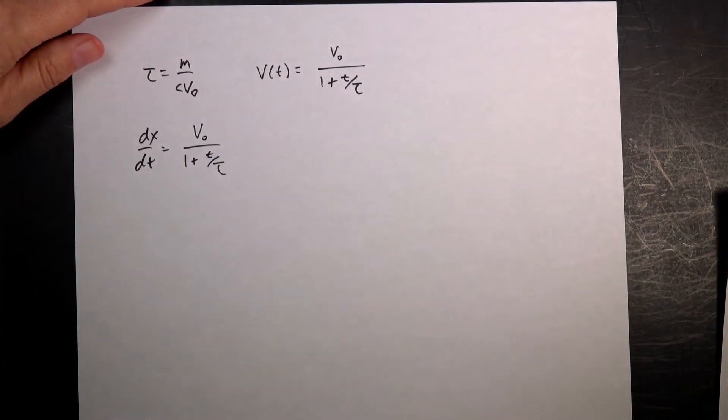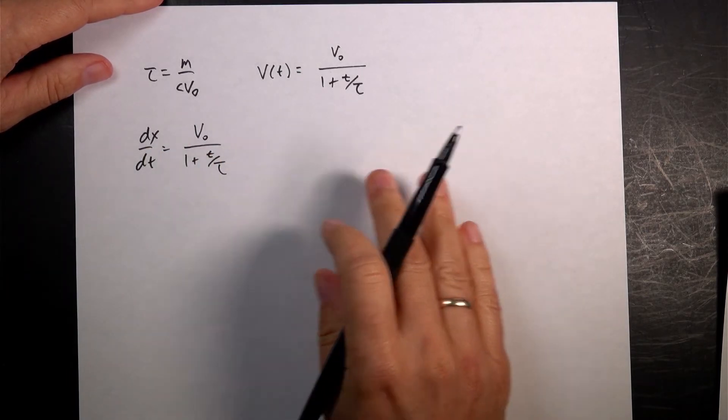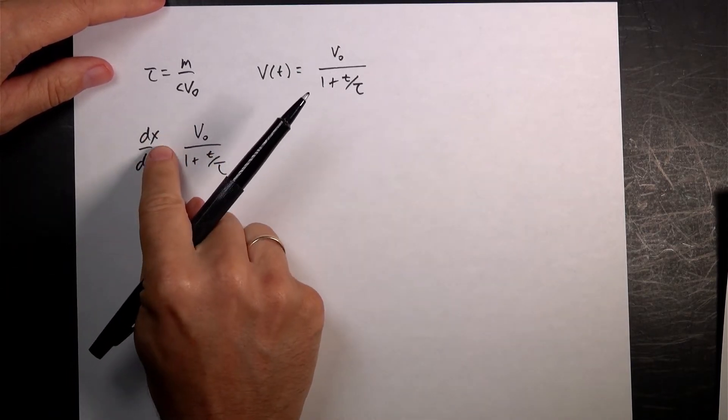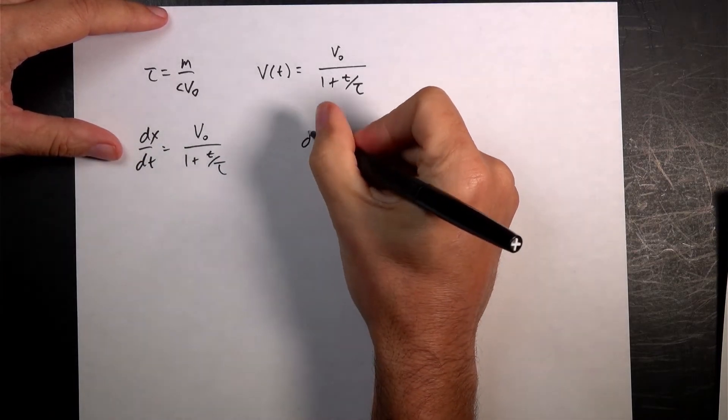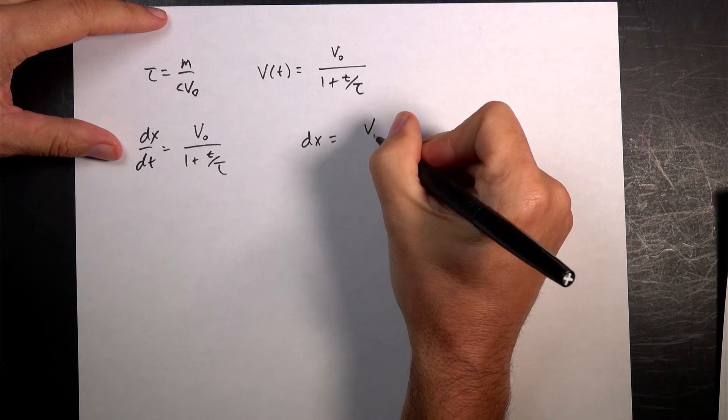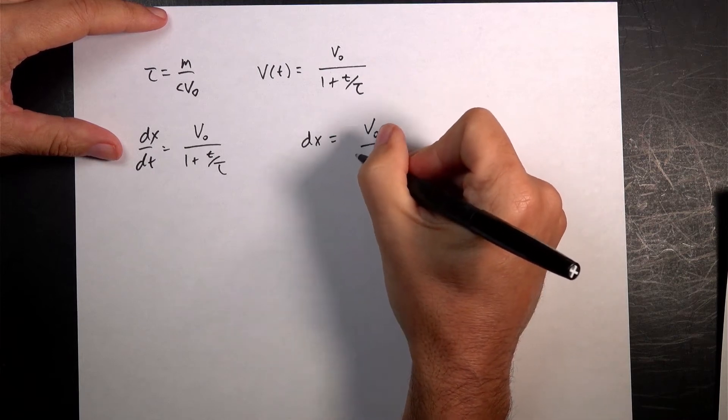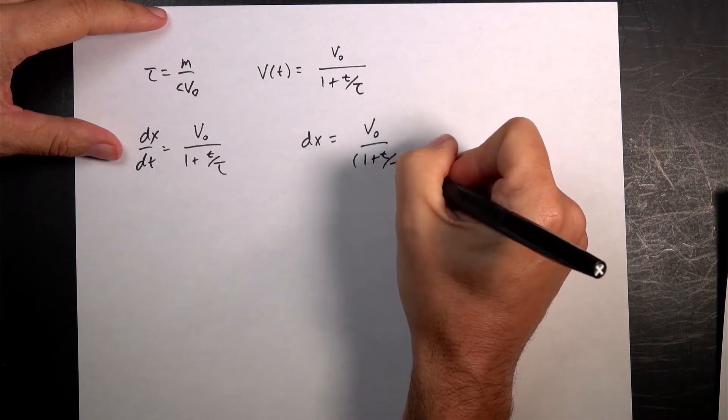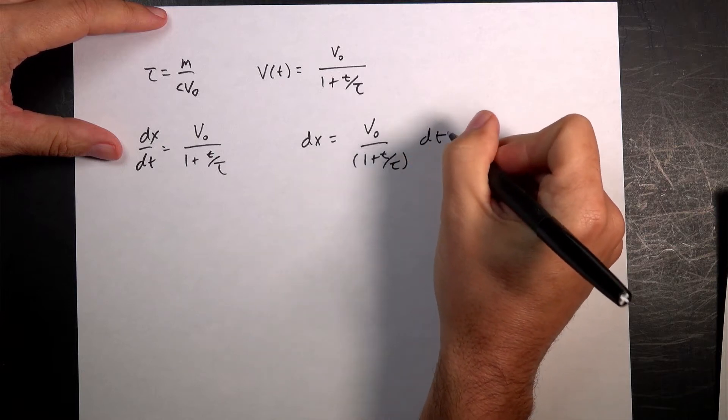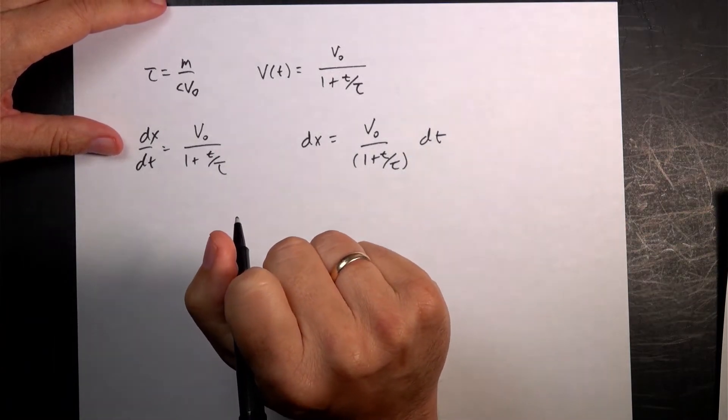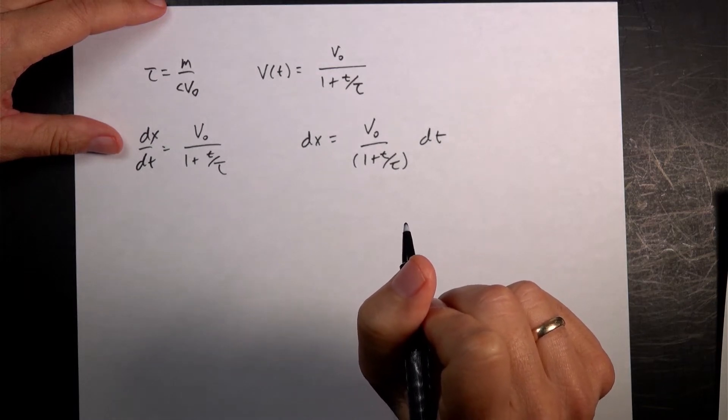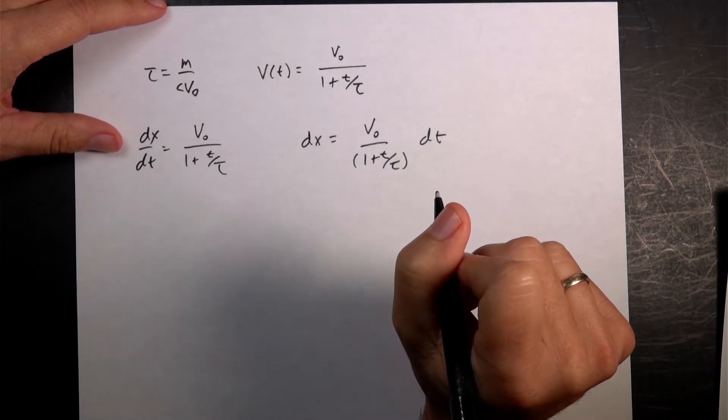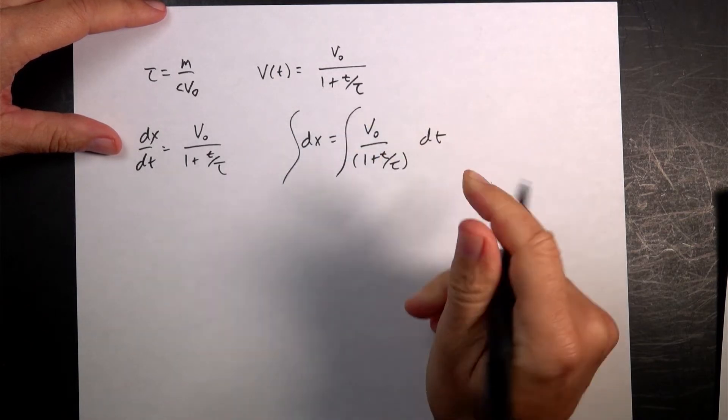And again, I want to separate the variables. So I want to get all the x terms on one side, all the t terms on the other side. There's only one x term, and it's dx, so that's pretty easy. So I can just multiply both sides by dt, and I get dx equals v0 over 1 plus t over tau times dt. So what I want to do is to integrate both sides, just like before.